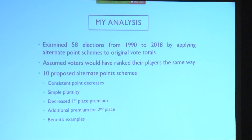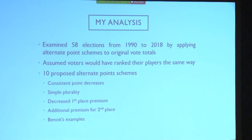So in my analysis — he published this paper in 1990, and I pick up where he left off. I've looked at all 58 MVP AL and NL elections from 1990 to 2018 and applied different point schemes to see if his findings of reversal still apply today. Crucially, I assume the ballots are honest — which is probably not true, since voters might have strategically tried to knock somebody out under a different system — but for the sake of this example it's reasonable because we're trying to see how point schemes affect things when preferences remain the same.